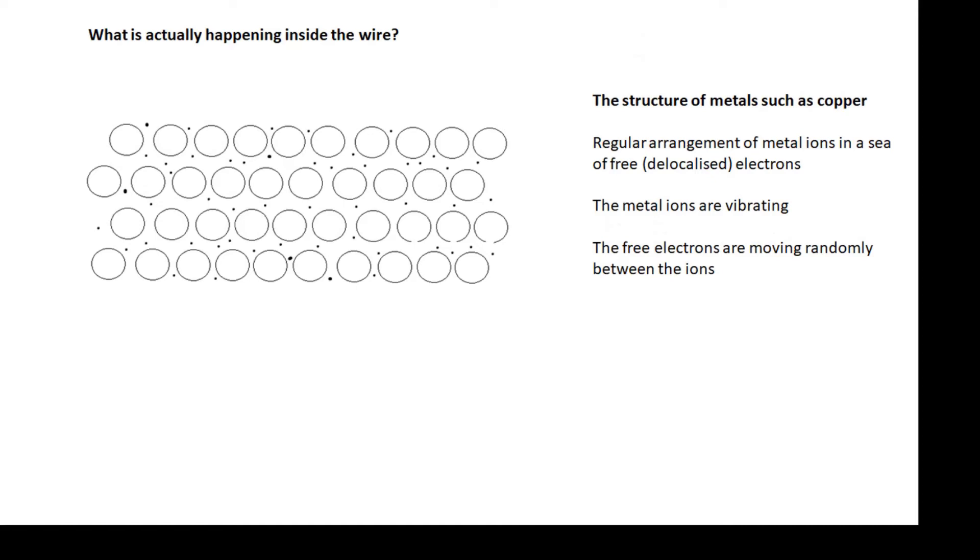What's actually happening inside the wire? Well, first of all, let's look at the structure. We have metal ions, which is a regular arrangement of these, for example copper ions, which are vibrating. And in between them, there are lots and lots of free electrons or delocalized electrons, and they're bouncing around randomly very fast in between the vibrating metal ions.